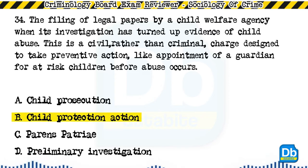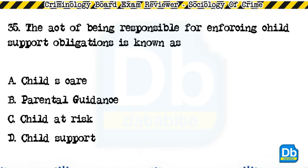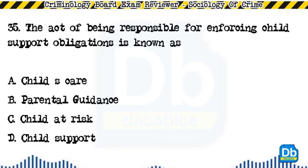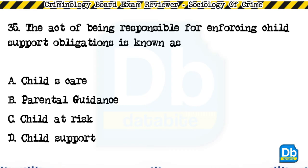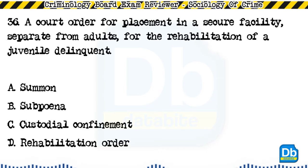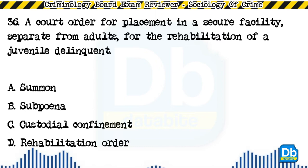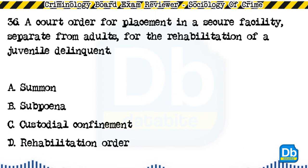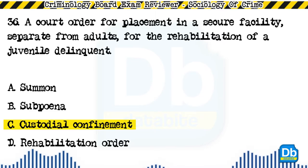The answer is B, child protection action. Question 35: The act of being responsible for enforcing child support obligations is known as: a) child's care, b) parental guidance, c) child at risk, d) child support. The answer is D, child support. Question 36: A court order for placement in a secure facility, separate from adults, for the rehabilitation of a juvenile delinquent: a) summon, b) subpoena, c) custodial confinement, d) rehabilitation order. The answer is C, custodial confinement.